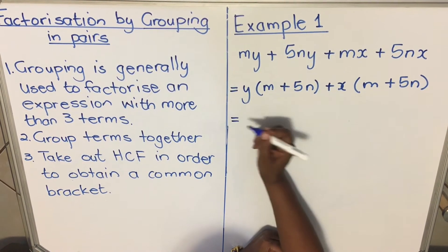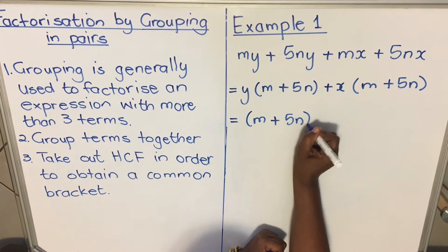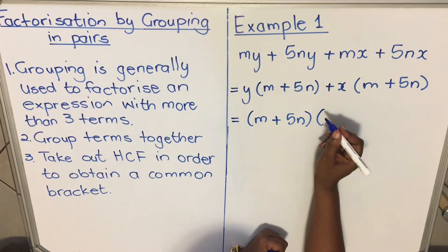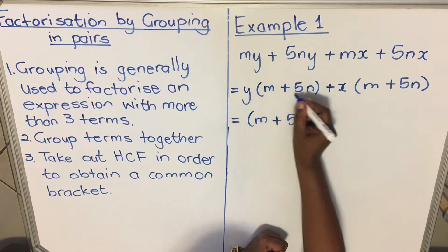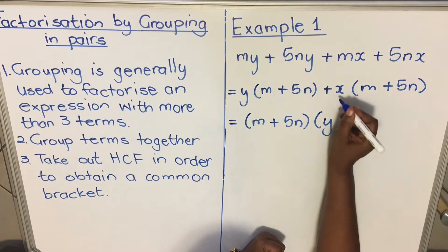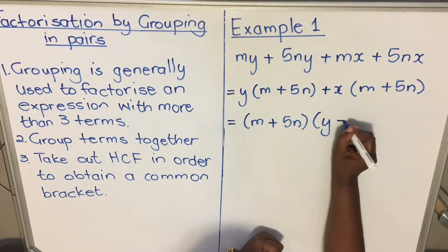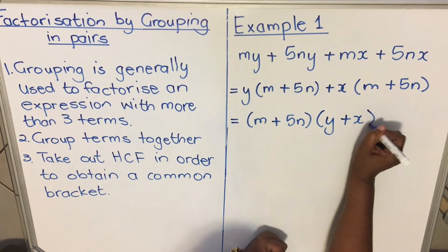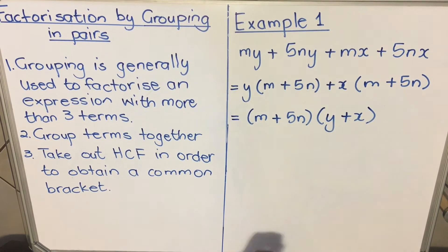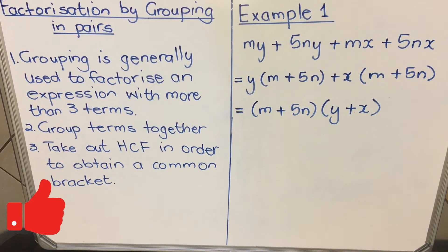You take that as a common factor: (m + 5n). Then what will be left? If I take m + 5n, I'm left with y from this bracket and from this term I'll be left with plus x. Now you have factorized it - everything is inside the bracket. This is factorizing by grouping.